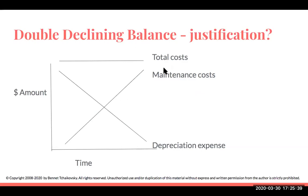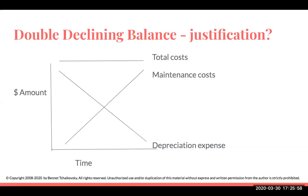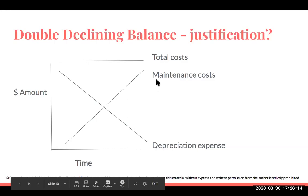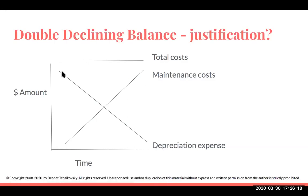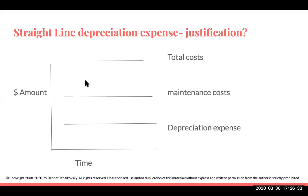In terms of double declining balance, this is an accelerated method of depreciation. The reason we use it is that maintenance costs are going to go up greatly later in the asset's life. So if I have an asset with high maintenance costs later in life, I justify taking more depreciation expense earlier on, because the total of depreciation plus maintenance gives me my total costs. That's the rationale behind using the various different methods — it has to do with the total cost of owning a piece of equipment.